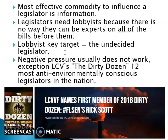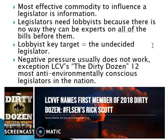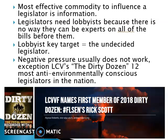The key target of a lobbyist is the undecided legislator. Interest groups know they're not going to convince a committed liberal environmentalist to vote to cut down the rainforest — that's not going to happen. So they target the undecided legislator to see if they can influence him or her to vote the way the interest group wants. Negative pressure usually does not work, but there is an exception: the League of Conservation Voters has something called the 'Dirty Dozen' — named after the 1960s film about twelve tough guys who saved the world.